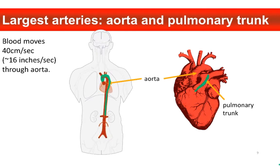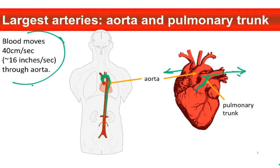Then we have the pulmonary trunk, which is going to send deoxygenated blood to each lung, so it transitions into the pulmonary arteries. The pressure in arteries is higher — blood pressure is highest in arteries, and nowhere is it higher than the aorta. Blood is moving really fast, at 16 inches a second, and it's also at incredibly high pressure, particularly in the aorta.